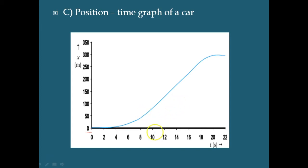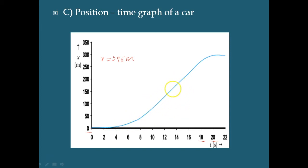The brakes are applied at t equal to 18 seconds, and the car stops at t equal to 20 seconds. At that time the position x was 296 meters. This is the position-time graph of a moving car. It is varying with respect to time and not varying uniformly — at the beginning it is just picking up speed, then for some period it is uniform, and then suddenly it stops.